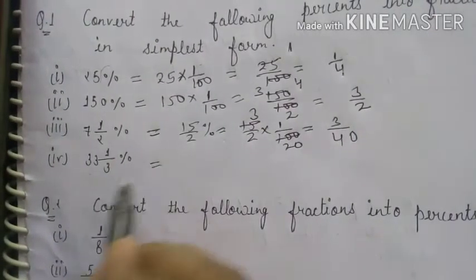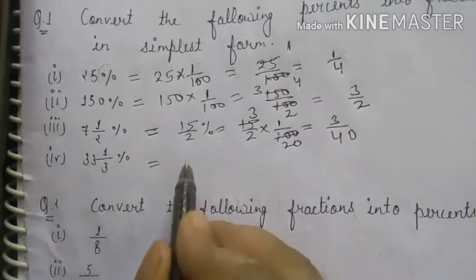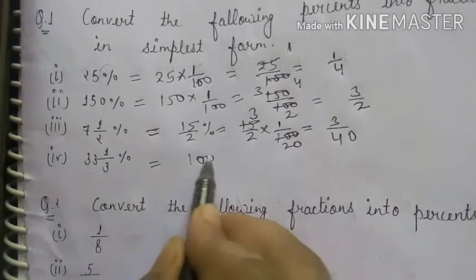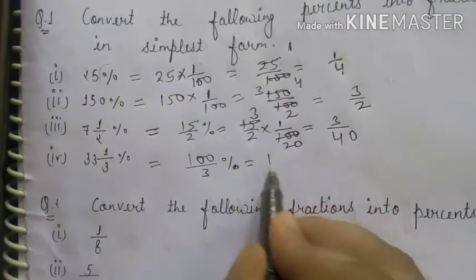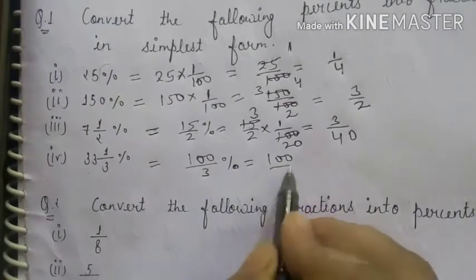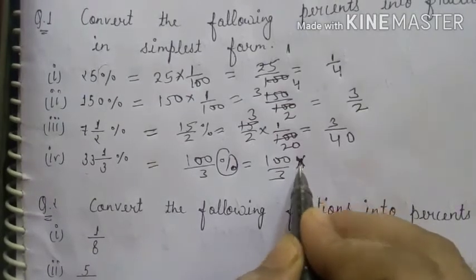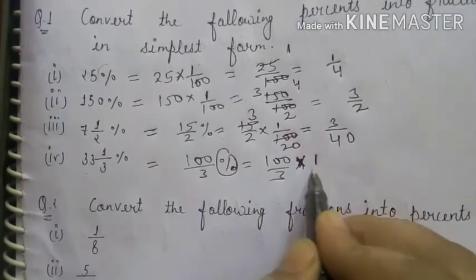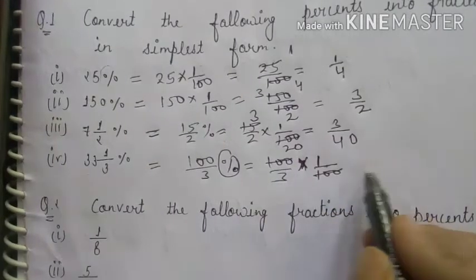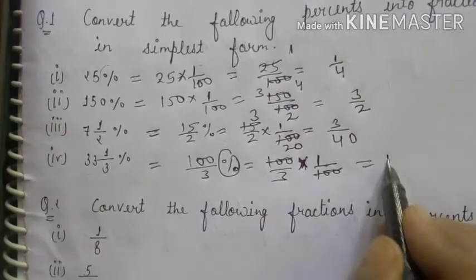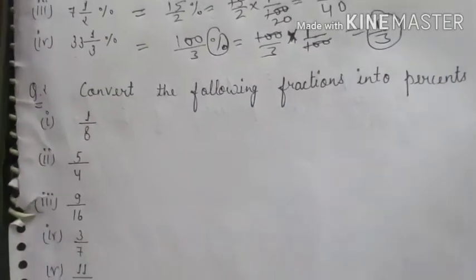Next, 33⅓%: it can be written as 100 upon 3 percent. Removing the percent, multiply 100 upon 3 by 1 upon 100 — the 100s cancel out — giving 1 upon 3.